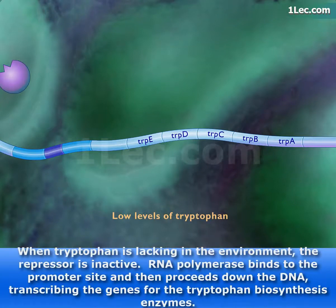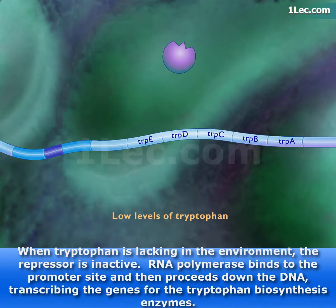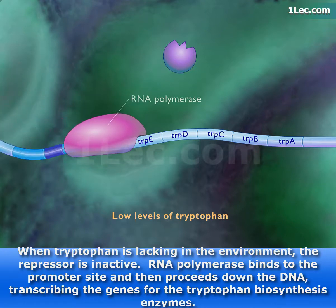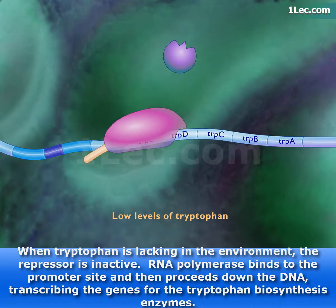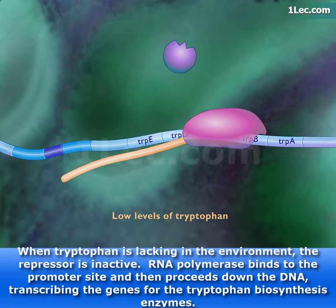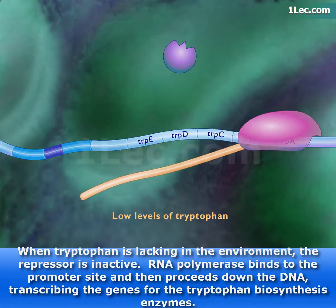When tryptophan is lacking in the environment, the repressor is inactive. RNA polymerase binds to the promoter site and then proceeds down the DNA, transcribing the genes for the tryptophan biosynthesis enzymes.